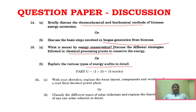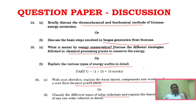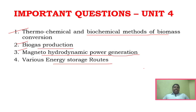For Part C: one question is to explain the basic layout, components, and working of a thermal power plant. Another question involves solar collectors — again from Unit 3. All the direct questions are very easy to learn.